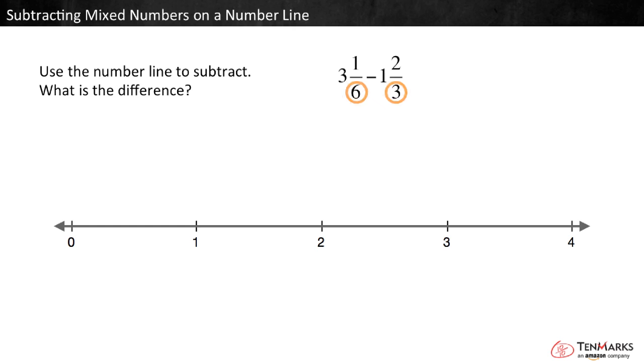The denominators now are 6 and 3. Some multiples of 6 are 6, 12, 18, and 24. Some multiples of 3 are 3, 6, 9, and 12. Since 6 is a multiple of both 3 and 6, 6 is a common denominator.